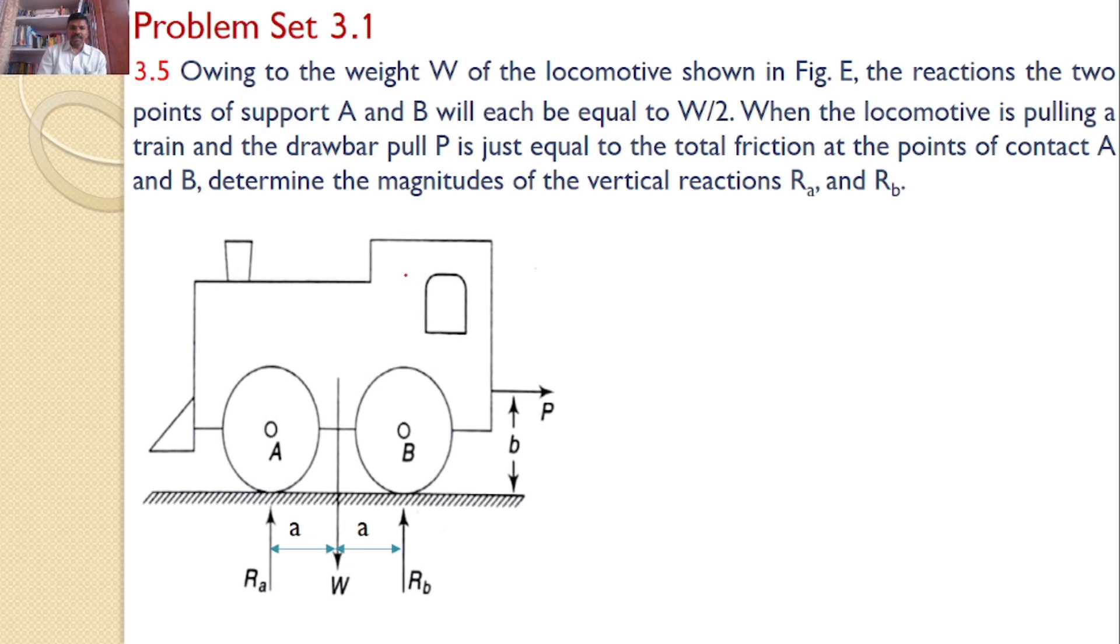That means, when the body is stationary, the weight of the body W must be satisfied by the two reactions, hence Ra and Rb is equal to W by 2. But when there is a force P acting in this direction in order to move the body, what are the reactions Ra and Rb?